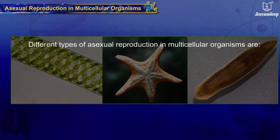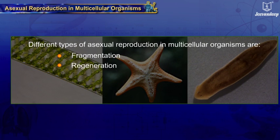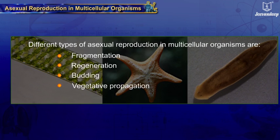Types of Asexual Reproduction in Multicellular Organisms: Fragmentation, Regeneration, Budding, Vegetative Propagation, and Spore Formation.